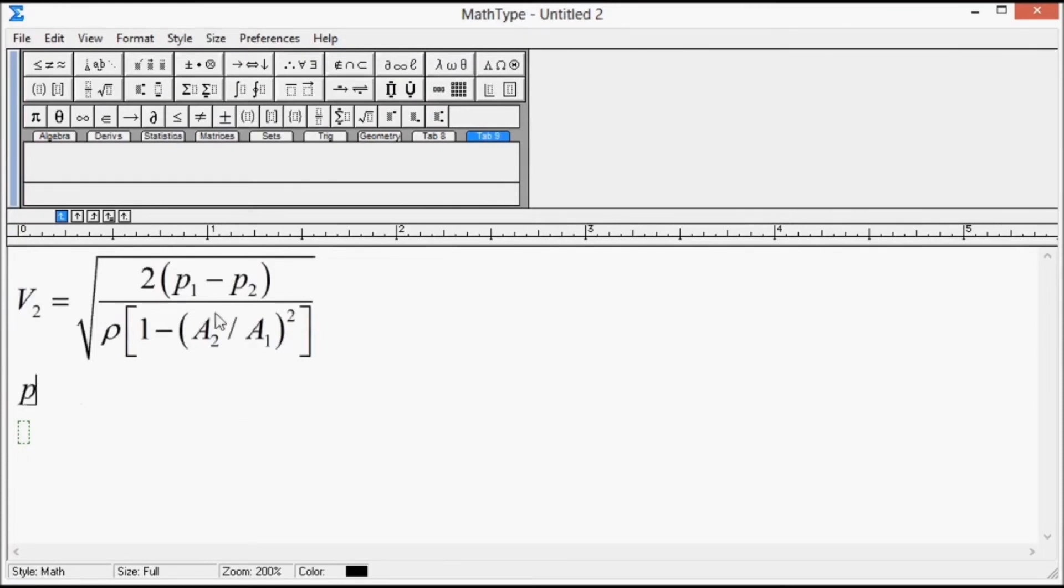We know that the formula for V2, that is velocity, is equal to root of 2 into P1 minus P2 divided by rho into 1 minus area ratio square. P1 minus P2 is equal to 1000 Newton per meter square. A2 by A1, that is the ratio, is equal to given 1 divided by 10.